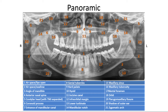Now let's go to the extraoral images. Panoramic x-rays spin around the patient's head — hence the name panoramic — and they're incredibly useful for screening for pathology of the jaws and locating third molars. This diagram lists the various landmarks on a pan. I won't go over all 21 numbers, but let's hit the highlights. Whenever I look at a panoramic, I have a systematic approach, and I recommend using the same method every time.